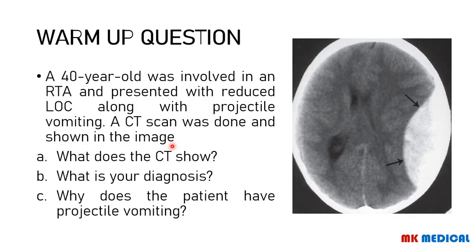Here's our warm-up question. A 40-year-old was involved in an RTA and presented with reduced level of consciousness along with projectile vomiting. A CT scan was done and shown in the image. Question A: What does the CT scan show? What is your diagnosis? Why does the patient have projectile vomiting? You may pause the video, write down your answers. I will give you the answer at the end of this lecture.